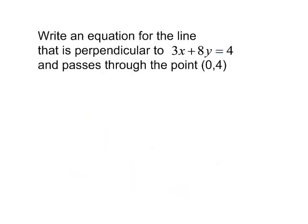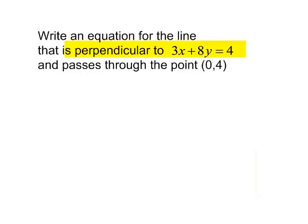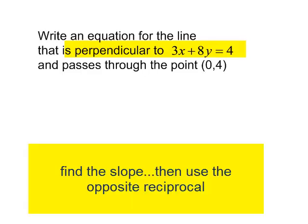Write an equation for the line that is perpendicular to 3x plus 8y equals 4 and passes through the point (0, 4). They gave me a point that my line passes through. They did not give me the slope. The information they did give me was that it's perpendicular to this line. Let's find the slope of this line. Let's use the opposite reciprocal, and then we will have the slope for our line.